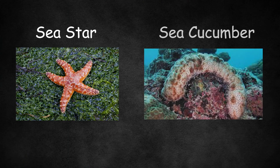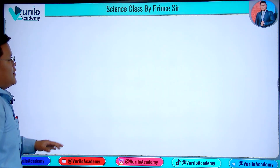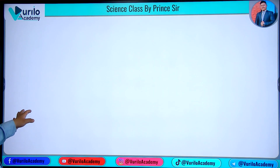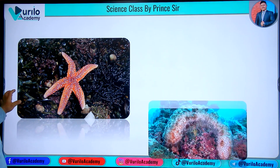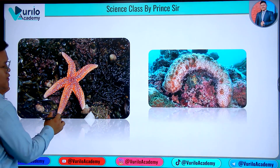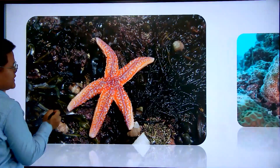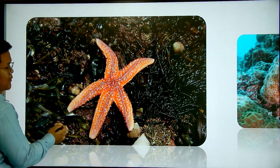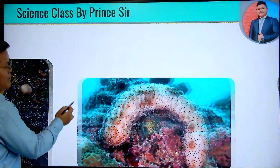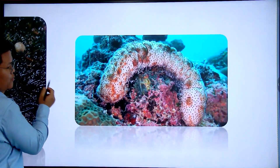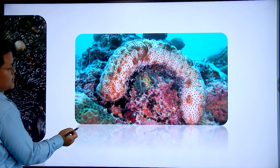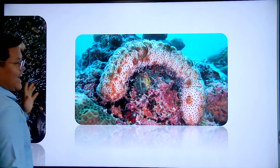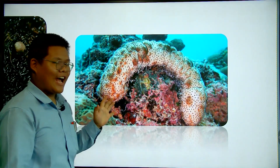Examples of Echinoderms include the sea star and the sea cucumber. Here we can see pictures of a sea star and a sea cucumber.